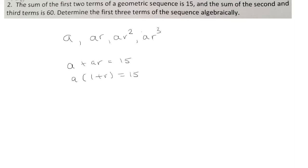Now the second and the third term is 60, so that's AR plus AR squared equals 60. I can factor out AR and have 1 plus R left.